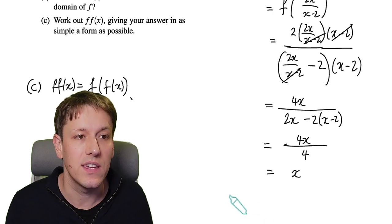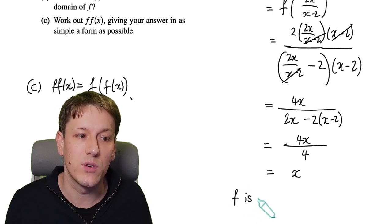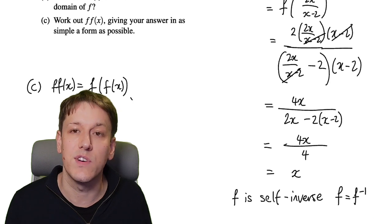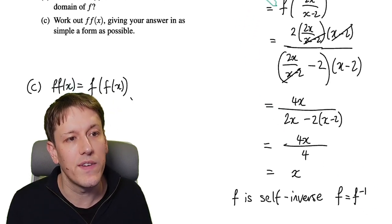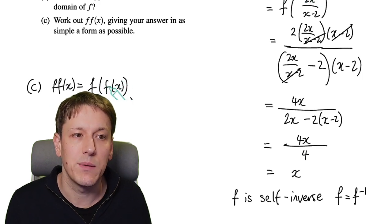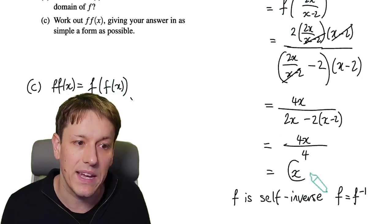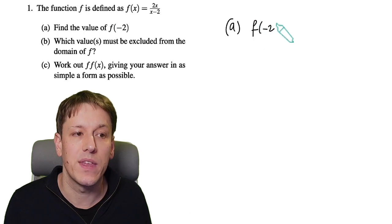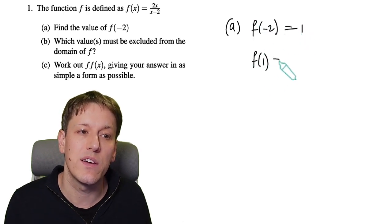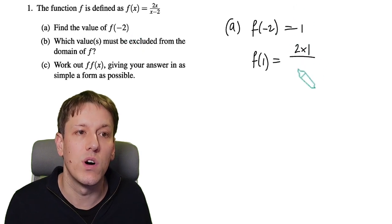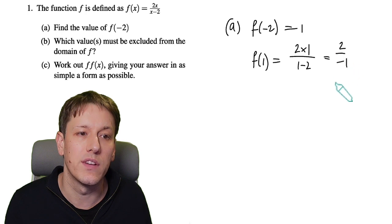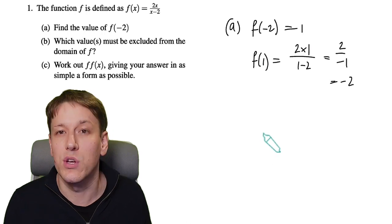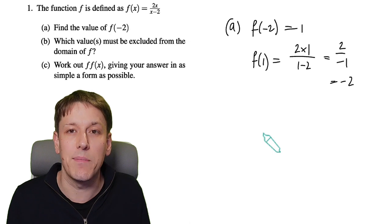This means f is quite an interesting function because we can say f is self-inverse — f equals f inverse — it's its own inverse. When you put a value x into the function and get out f(x), then put that output back into the function, you just get back to x. We can verify with part a: f(-2) = 1, and f(1) = 2×1 / (1-2) = 2 / -1 = -2, taking us back to the original input. Applying the function twice always gets you back to where you started.